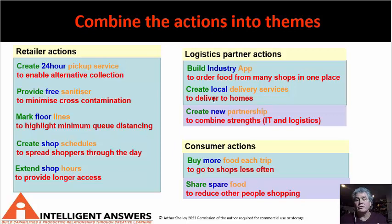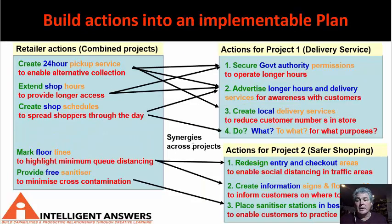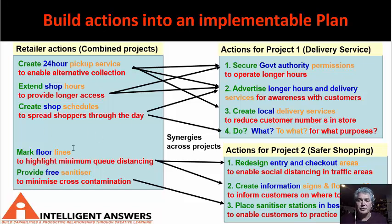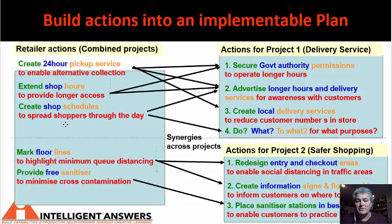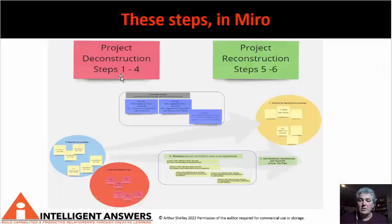Combining them into themes gives you actionable bites of things, and some of these will become projects. For example, the two sets of activity on the right can be built into a project — one around a delivery service, and the second around safer shopping practices. But there's also another project that retailers can do, and they take a series of actions. When they do these things, you get some synergies happening in the other areas as well.